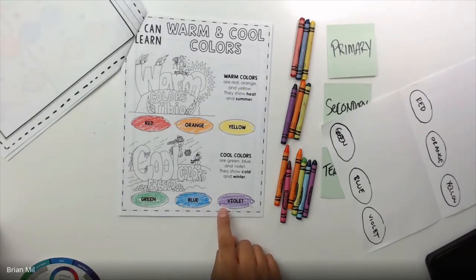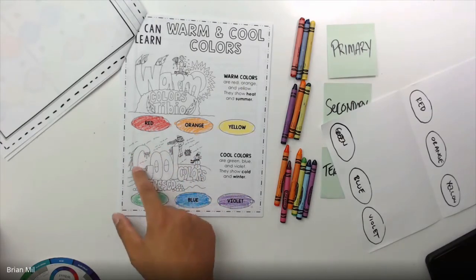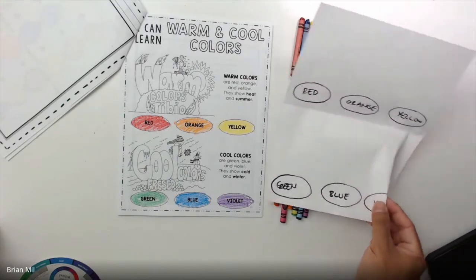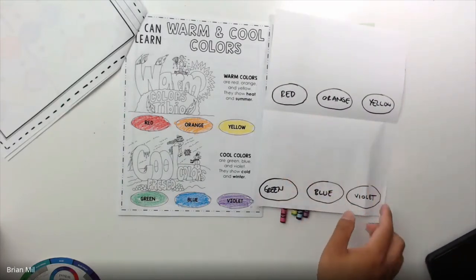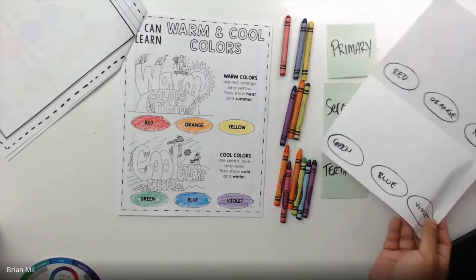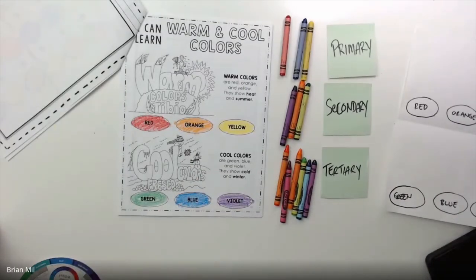And then, once you're done filling in these little ovals down here, you're going to use these three colors only to color the theme of cool colors down here. And again, if you have a blank sheet of paper and you don't have the packets, you're going to have to draw your own scene. It could be anything you want. It could be winter theme maybe, or something with cold theme. Or, you can use the worksheet right here, if you have the worksheet.